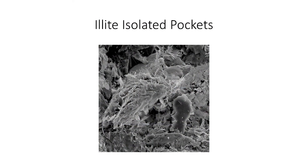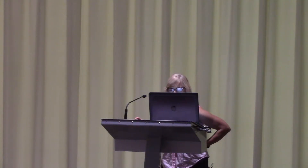These are isolated pockets of ilite. We can see they're not connected to each other — they're isolated. Again, it's going to have a different effect on the flow pattern.